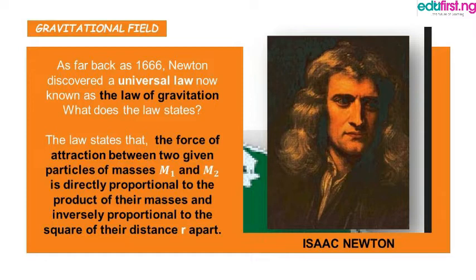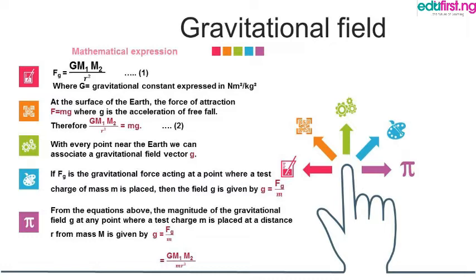That force is directly proportional to the product of the masses of the two bodies and inversely proportional to the square of the distance between them. The mathematical expression for gravitational force F_G is given as capital G multiplied by M1 multiplied by M2, all divided by R squared — equation one.